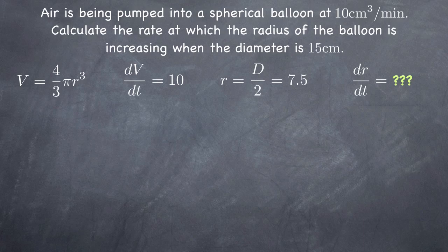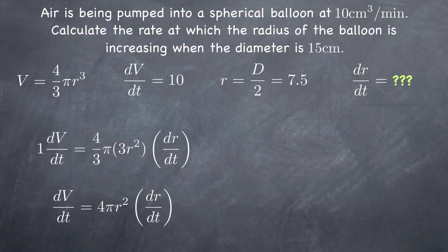Now that we know what we have and what we need, we'll differentiate both sides of our volume equation. Remember, treat every variable like you've always treated x when dealing with regular derivatives. This time though, every time you take the derivative of a term that involves a variable, you need to multiply by the derivative of that variable. So when you take the derivative of v, just like taking the derivative of x, you get 1, but you have to multiply by dv over dt.